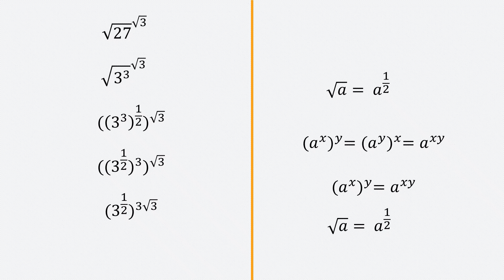Now I know that the square root can be written as an exponent of half, so I bring that back in and I have the square root of 3 raised to the power 3 root 3.